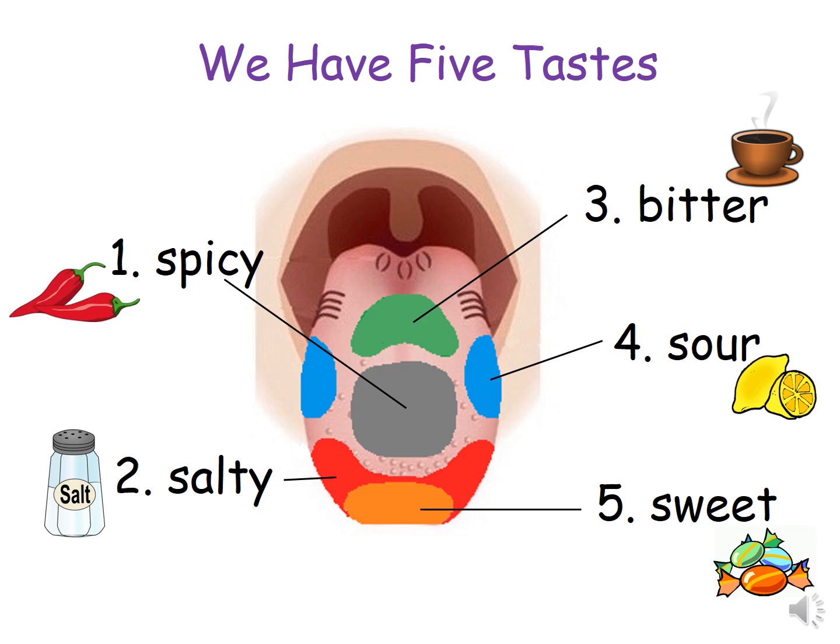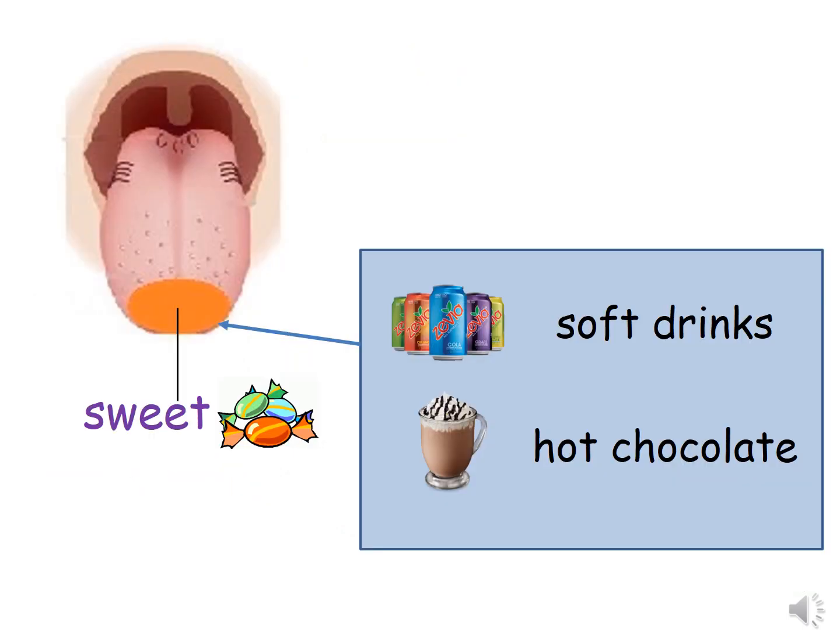5. Sweet. The orange area on your tongue is where you taste sweet food and drinks like candies, soft drinks and hot chocolate.